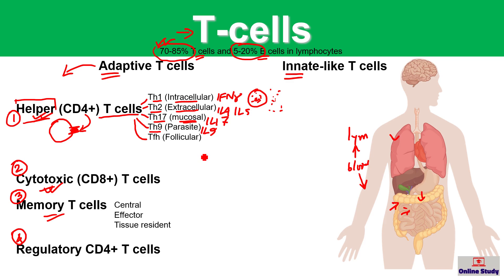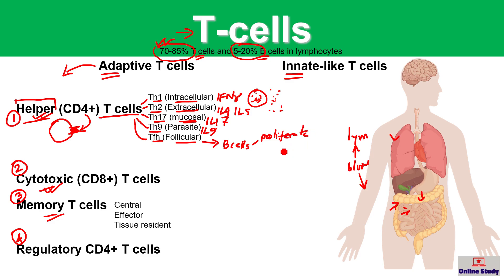Follicular helper T cells are T cells that reside in the follicles of secondary lymphoid organs. Their main function is to help B cells proliferate, make antigen-specific plasma cells or activated B cells, produce cytokines, and support somatic hypermutation.